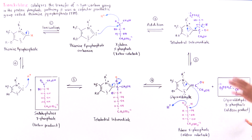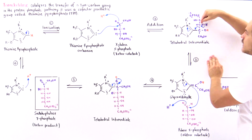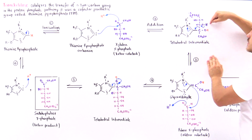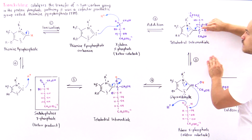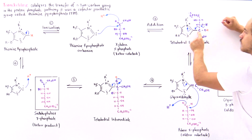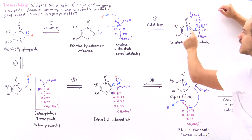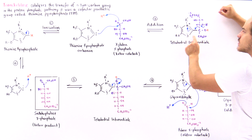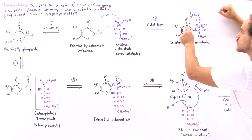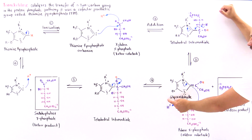The sigma bond is broken as a pi bond forms between the oxygen and the carbon; the H ion departs and that pi bond breaks the sigma bond. As the sigma bond breaks, a pi bond forms between the adjacent carbons. The pi bond then breaks, and those two electrons end up on the nitrogen. The nitrogen in the thiazol ring of the thiamine pyrophosphate acts as an electron acceptor.